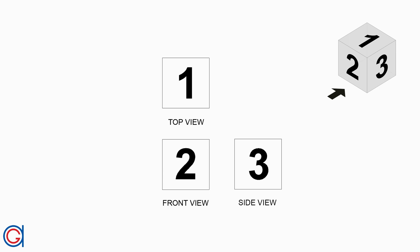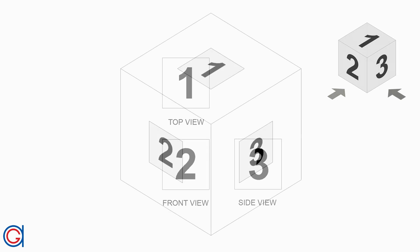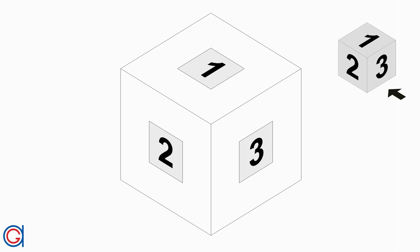Sometimes in technical drawing the front elevation is indicated with an arrow in the isometric view, as can be seen here on the top right of the screen. Imagine another case where face number three is indicated as the front view by an arrow, as shown here.